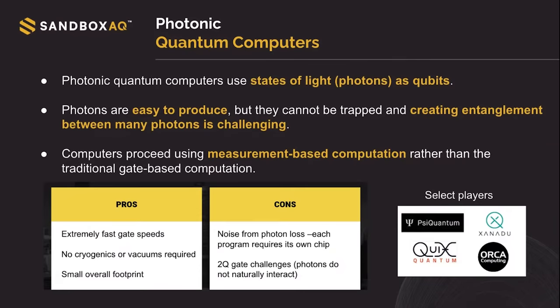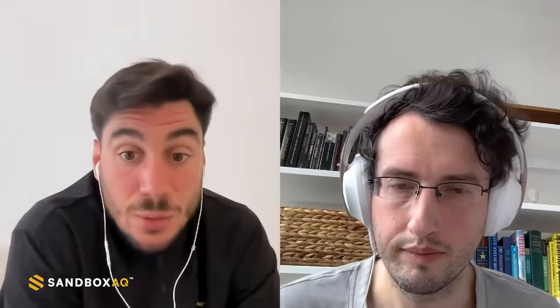Photonic quantum computers use states of light — photons as qubits. Photons are easy to produce, but the problem is that they can't be trapped easily to create entanglement between many photons. These computers use measurement-based computation rather than traditional gate-based computation. They have extremely fast gate speeds, they don't need a fridge or vacuums, and they have a very small overall footprint. The problem is noise coming from photon loss. And the two-qubit gate challenges — photons don't naturally interact.